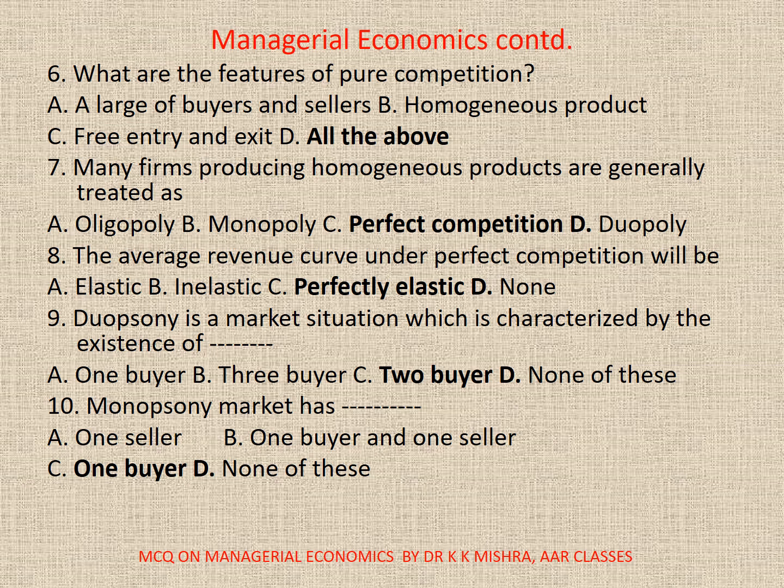9. Duopsony is a market situation which is characterized by the existence of: A. One Buyer, B. Three Buyers, C. Two Buyers, D. None. Correct option is C. Two Buyers.